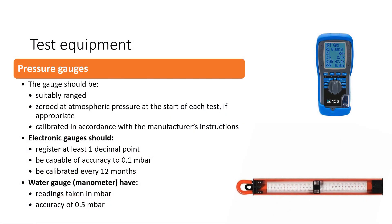Moving on to test equipment — there are two types: electronic and water gauge (U-gauge) type test equipment. Regardless of which type you use, they should be suitably ranged. It's no use using a U-gauge that only reads up to 10 millibars on a 20 millibar system, so they should be suitably ranged. They should be zeroed before use, and in the case of electronic gauges, they should be calibrated in accordance with the manufacturer's instructions.